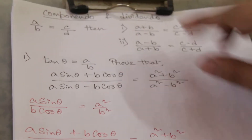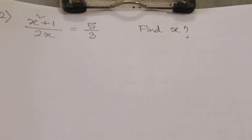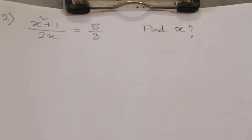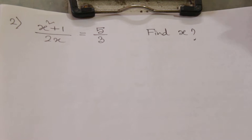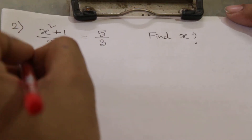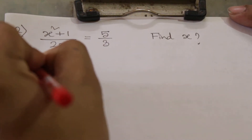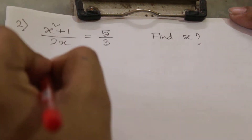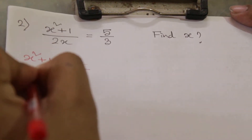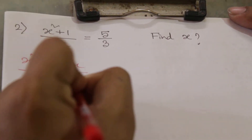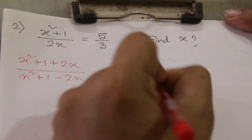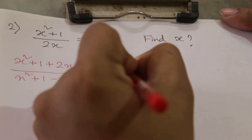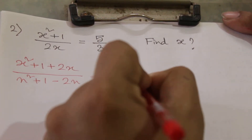Moving on to our next example: (x² + 1)/(2x) = 5/3. What we will do is again use componendo and dividendo — numerator plus denominator over numerator minus denominator — and on the right-hand side it will become (5 + 3)/(5 - 3).